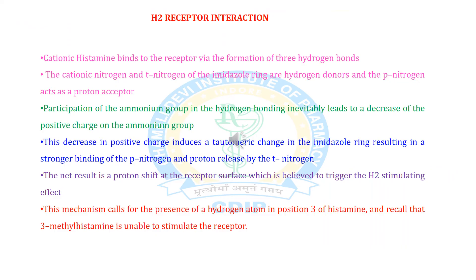Regarding receptor interaction of H2 antagonists: cationic histamine binds to the receptor by formation of three hydrogen bonds. The cationic nitrogen and tertiary nitrogen of the imidazole ring are hydrogen bond donors, and the pi-nitrogen acts as a proton donor. Participation of the ammonium group in hydrogen bonding leads to a decrease in positive charge on the ammonium group. This decrease induces a tautomeric change in the imidazole ring, resulting in stronger binding of the nitrogen and proton released by the tertiary nitrogen. The net result is a proton shift at the receptor surface, which triggers the H2 stimulating effect. This mechanism requires a hydrogen atom at position 3 of histamine, which is why 3-methyl histamine is unable to stimulate the receptors.